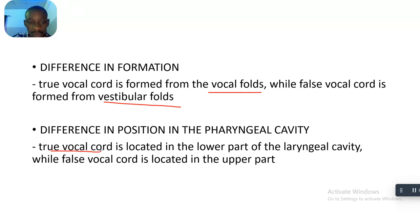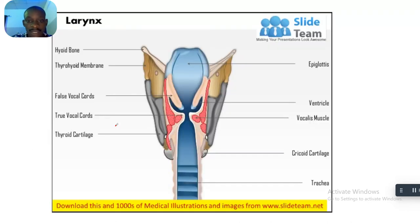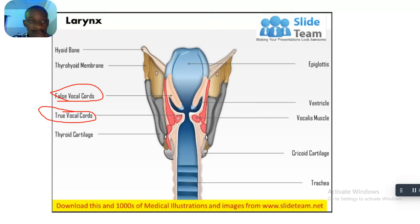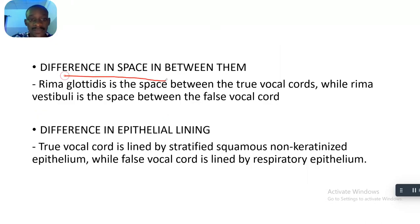The second difference is position in the laryngeal cavity. The true vocal chords are located in the lower part of the laryngeal cavity, while the false vocal chords are located in the upper part. You can see in this image that the true vocal chords are lower while the false vocal chords are higher in the laryngeal cavity. The true vocal chords are lower than the false vocal chords.